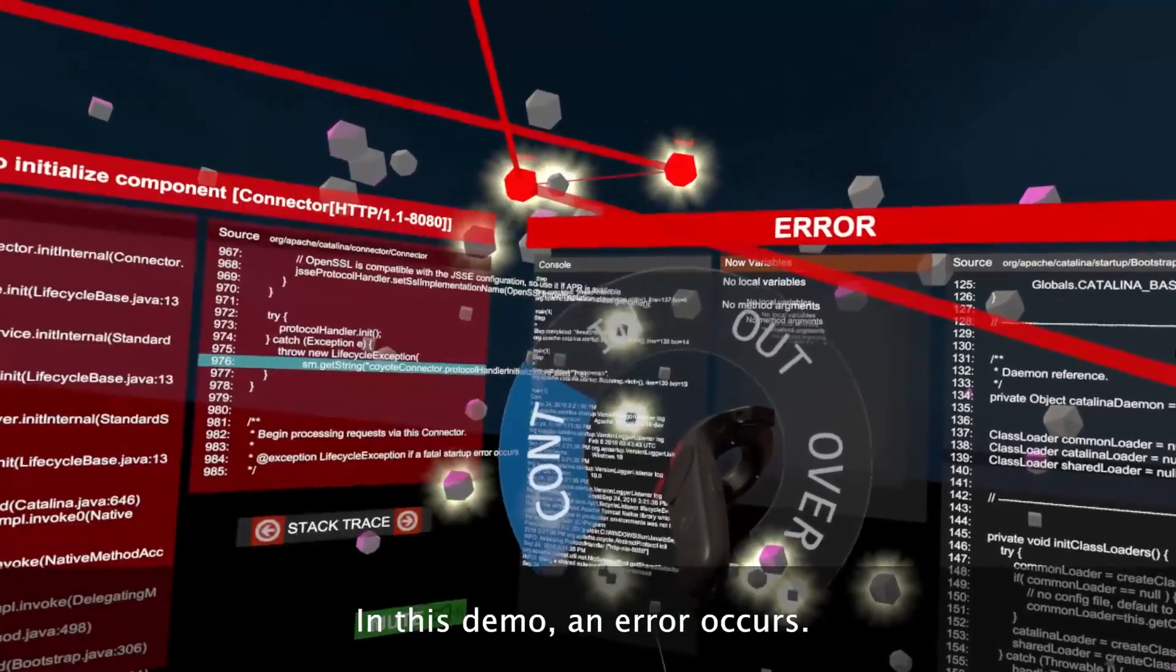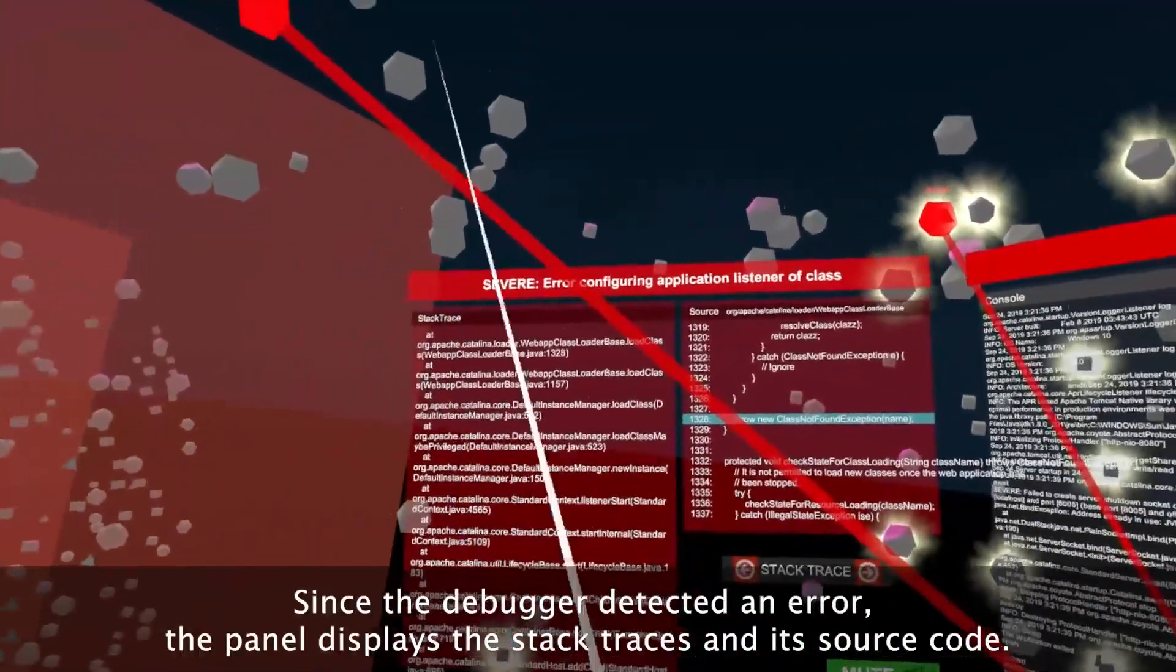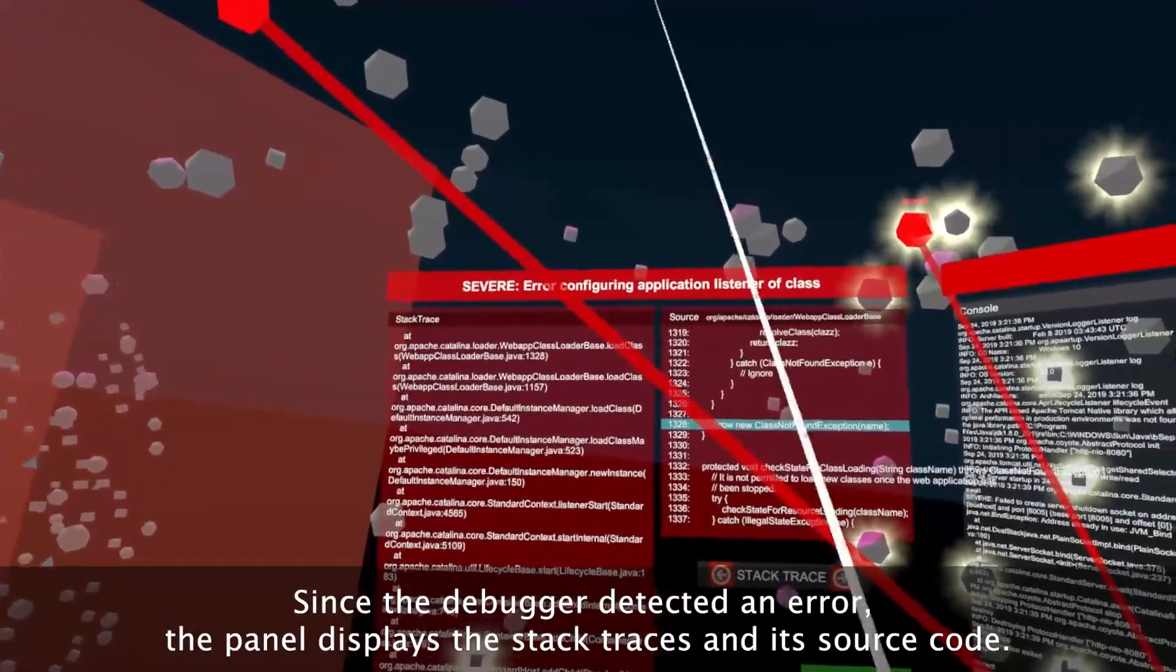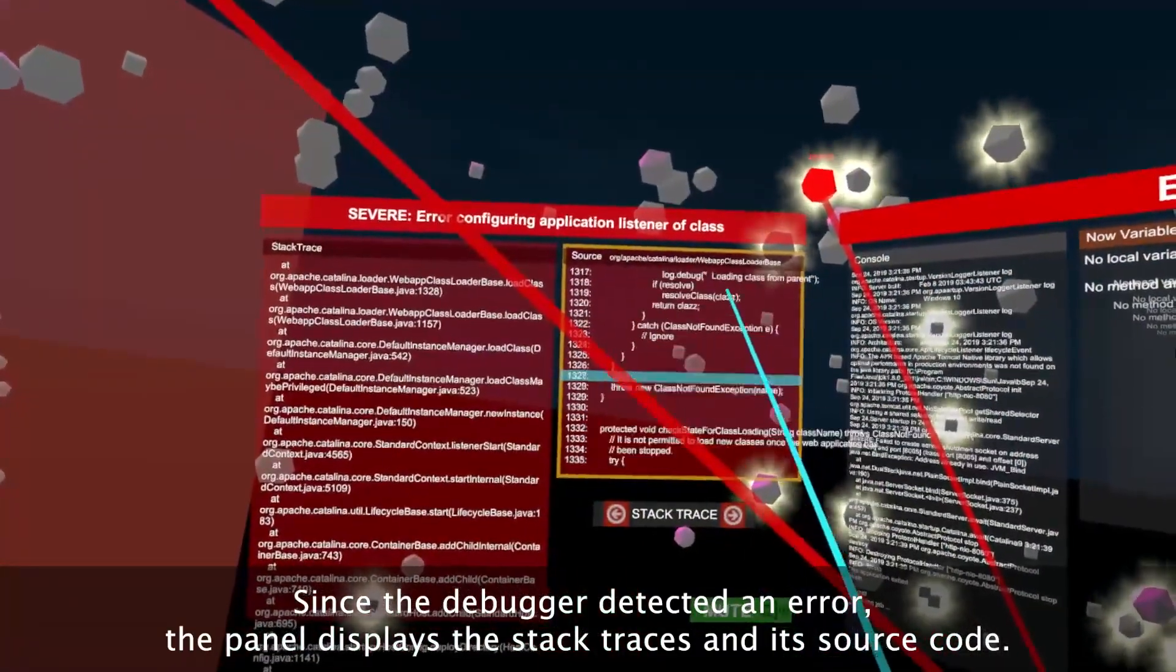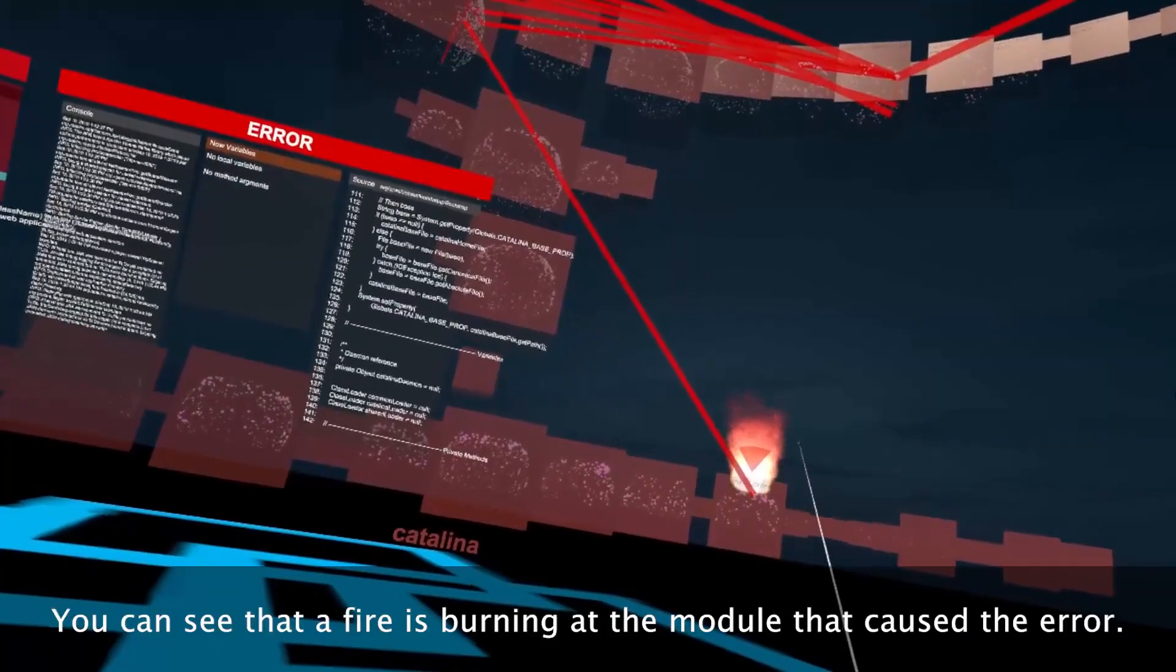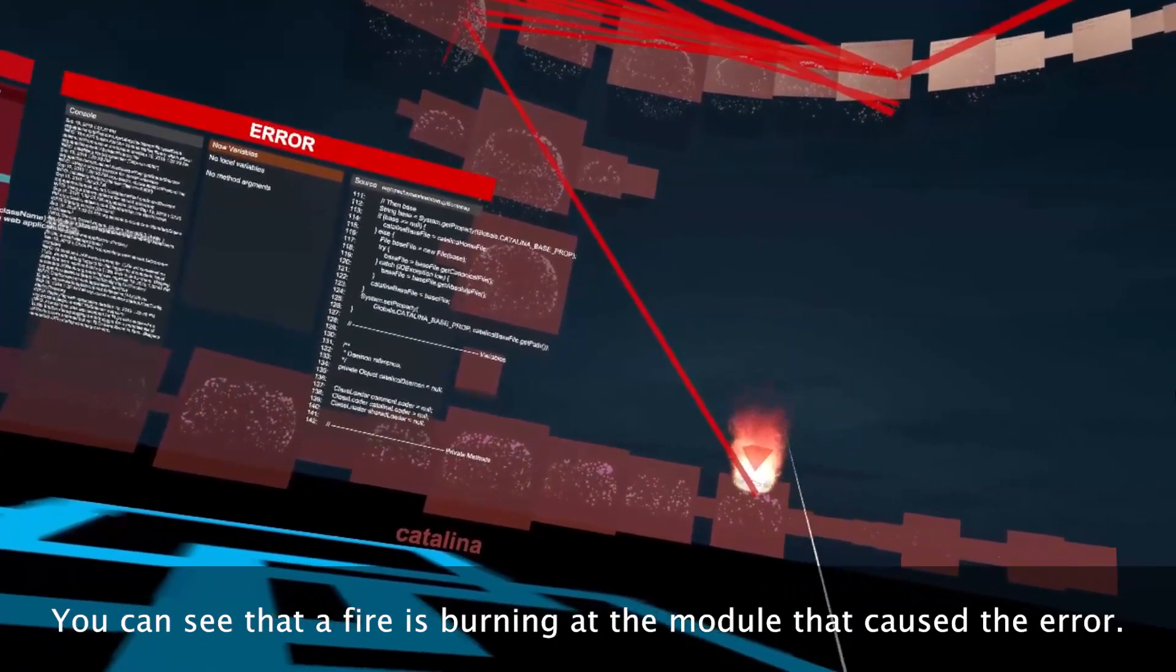In this demo, an error occurs. Since the debugger detected an error, the panel displays the stack traces and its source code. You can see that a fire is burning at the module that caused the error.